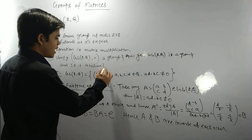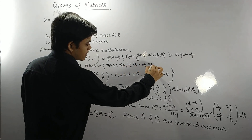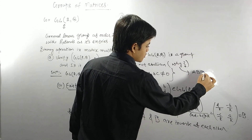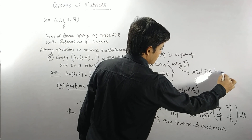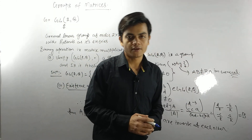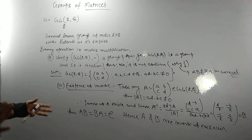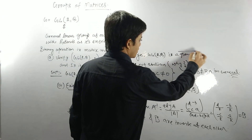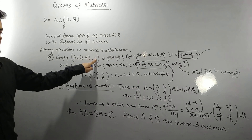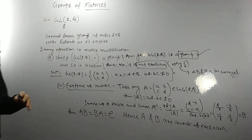But is GL(2,Q) abelian? The answer is no, it is not abelian, because in general A·B ≠ B·A. Matrix multiplication does not satisfy commutativity in general. Therefore GL(2,Q) with respect to multiplication is a group but not an abelian group.